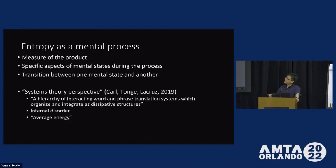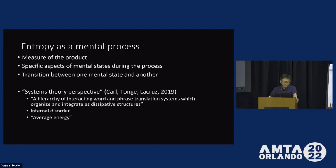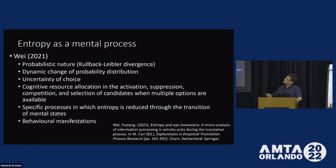However, there is an exception, which is the systems theory perspective. From that perspective, the translation process is considered a hierarchy of interacting word and phrase translation systems, which organize and integrate as dissipated structures. Entropy here is defined as the internal disorder of the system and the expenditure of effort, where this effort is described as average energy. That expenditure decreases the internal disorder — which in other words decreases the entropy of the system. The definition there is clearly from a systems theory perspective. Another paper adopts a slightly different perspective, focusing more on the probabilistic nature of the concept of entropy and the dynamic change of probability distribution.